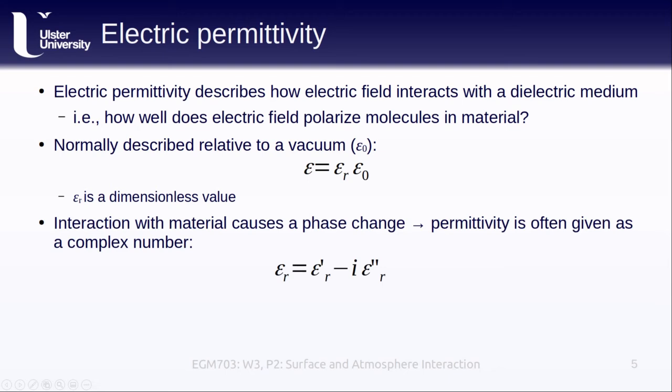Because the interaction of an electromagnetic wave with a material causes a change of phase of the electromagnetic wave, we often consider permittivity as a complex number, with epsilon prime corresponding to the real part of the permittivity and epsilon double prime corresponding to the imaginary part. You may also hear or see the term dielectric constant. Most of the time, dielectric constant is only referring to the real part of the electric permittivity, epsilon prime.